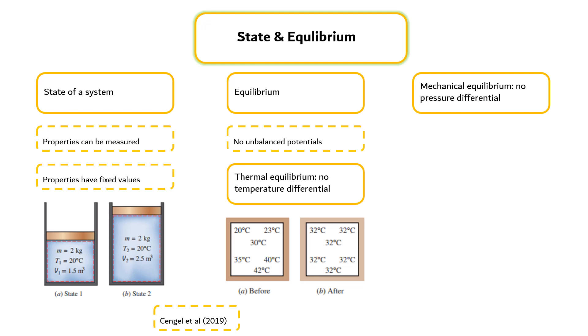However, the pressure may vary within the system with elevation as a result of gravitational forces. If a system involves two phases, it is in phase equilibrium when the mass of each phase reaches an equilibrium level and stays there.